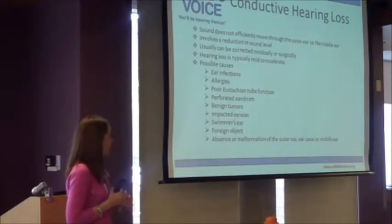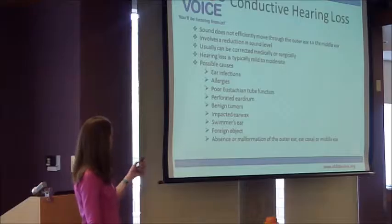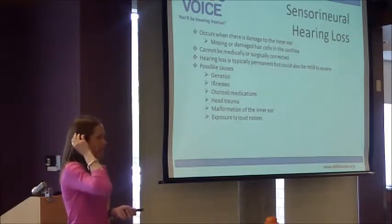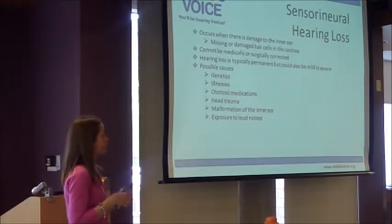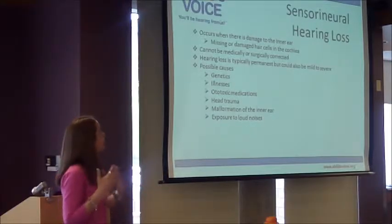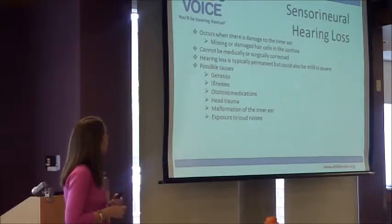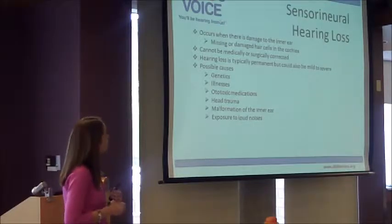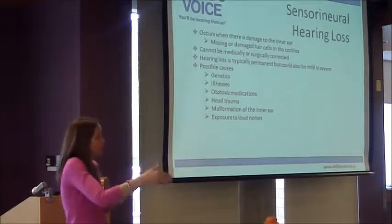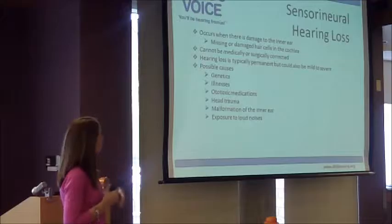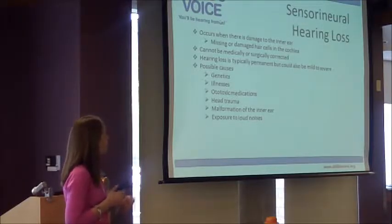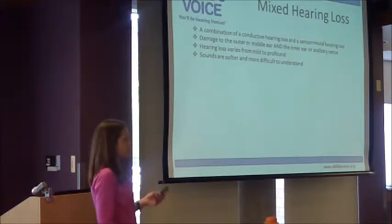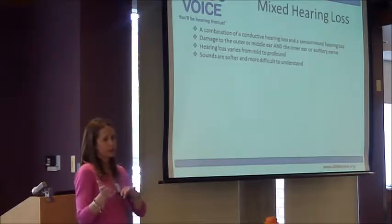There's also the absence or malformation of the outer ear, ear canal, or middle ear as a cause of conductive hearing loss. Sensorineural hearing loss involves the inner ear — something is going on in the cochlea that's not working right, maybe missing or damaged hair cells. This cannot be corrected with surgery or medicine. The hearing loss is typically permanent, though it could still be just a mild permanent loss. Causes include genetics, illnesses, medications, head trauma, malformation, and exposure to loud noises. A mixed hearing loss is a combination of conductive and sensorineural — something going on with the outer ear and also with the cochlea in the inner ear.